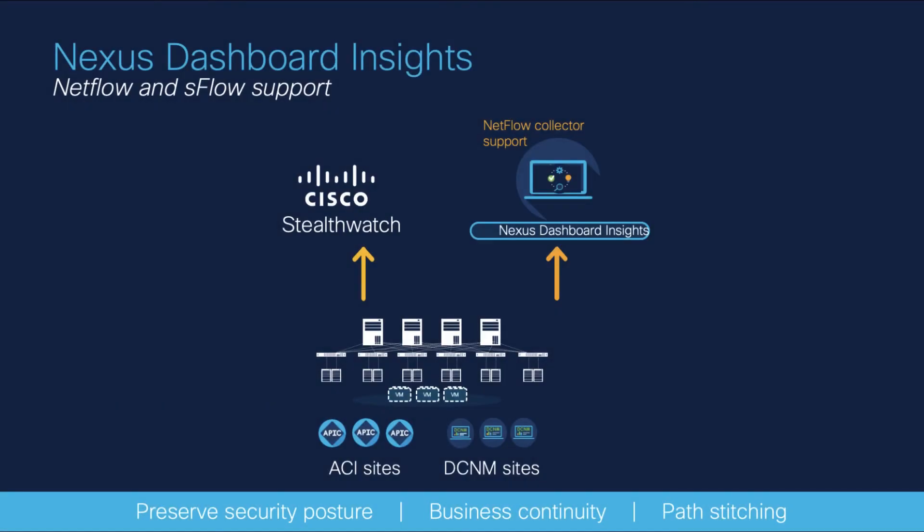Nexus Dashboard Insights supports S-Flow in DCNM sites and NetFlow capabilities in ACI and DCNM sites. Nexus Dashboard Insights thereafter normalizes the flow records, correlates them together to provide end-to-end flow path, latency, where the drops happened and why, if any, and provides a rich flow data.